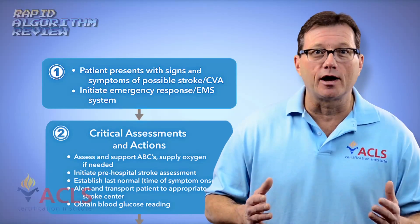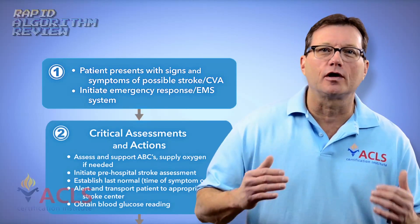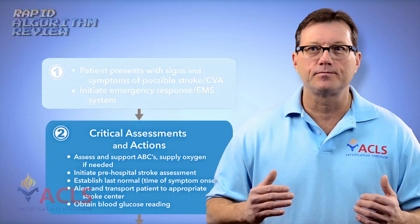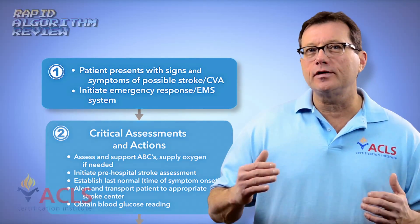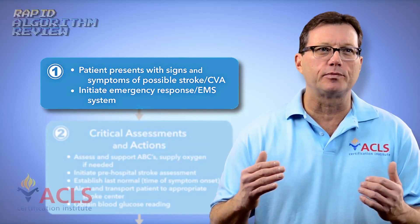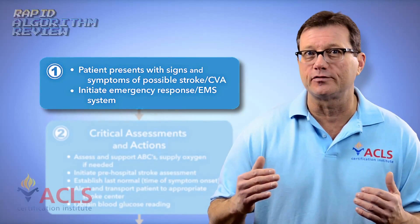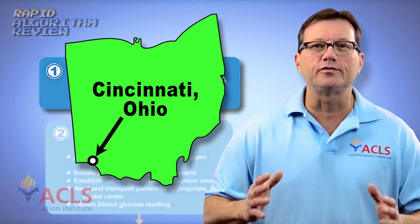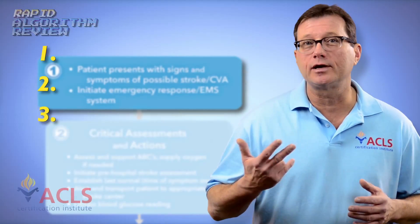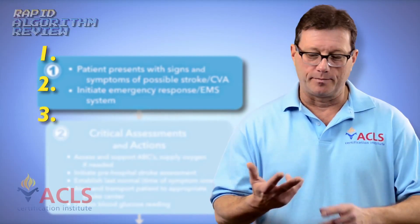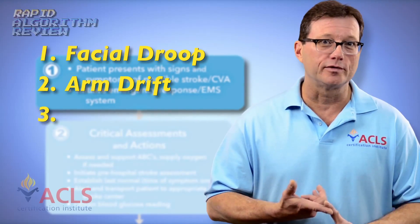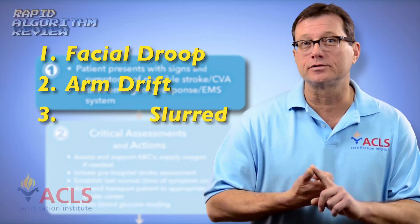Just like other algorithms, it all starts with the patient presentation. When assessing for stroke, a great pre-hospital or even hospital assessment is the Cincinnati Stroke Scale, and there are three components: facial droop, arm drift, and slurred speech.